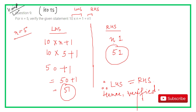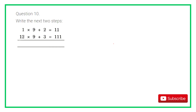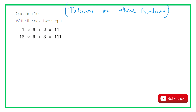Question 10 is about patterns of whole numbers — write the next two steps. In our NCRT textbook there are no specific questions on patterns, so I want to explain how to approach them. First, identify what is increasing, decreasing, or constant. The pattern given: 1 into 9 plus 2 equals 11, and 12 into 9 plus 3 equals 111.